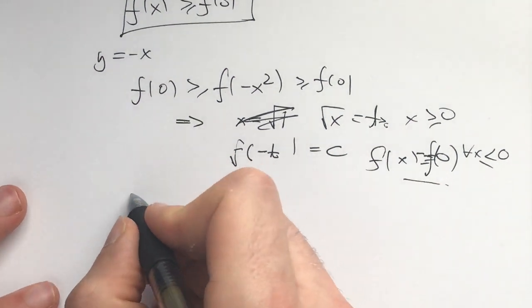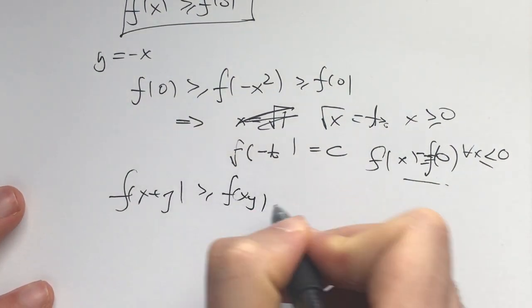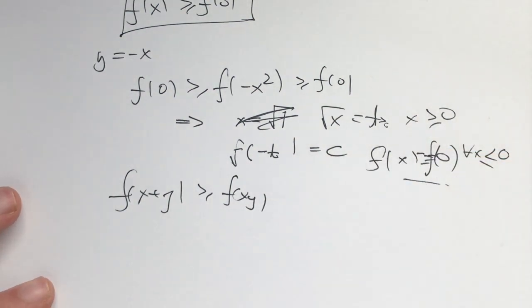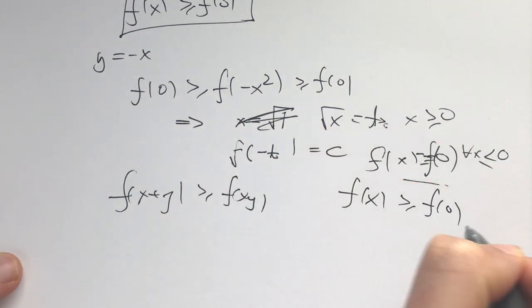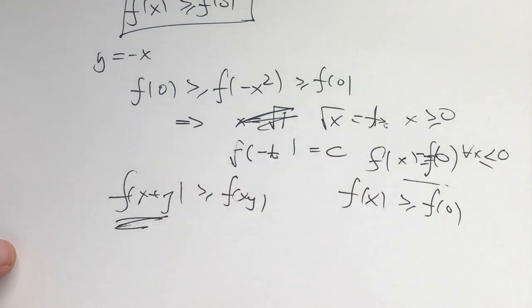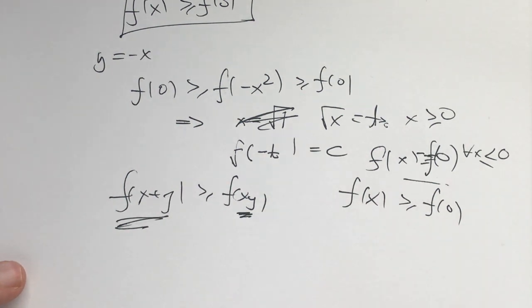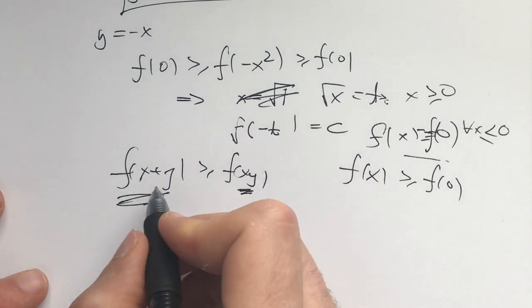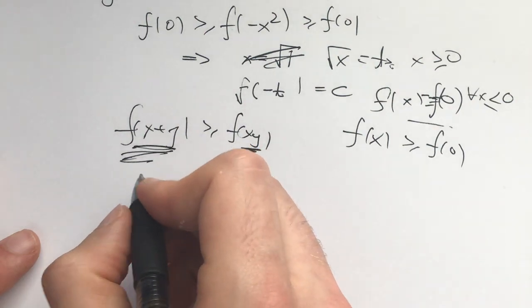And the way we do that is the following. We have f(x+y) ≥ f(xy). We know that if we get a negative number, we are good to go. And we know that f of every x is ≥ f(0). So we need f(0) on this side and a positive real number on this side. So how do we do that? With two negative numbers here, I will get a positive number here. And that's pretty much the idea.